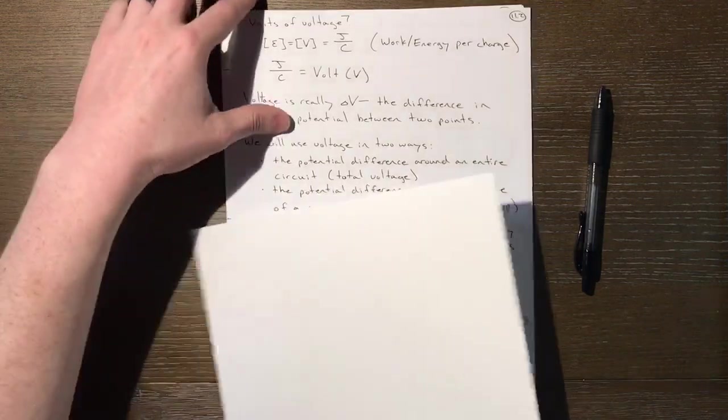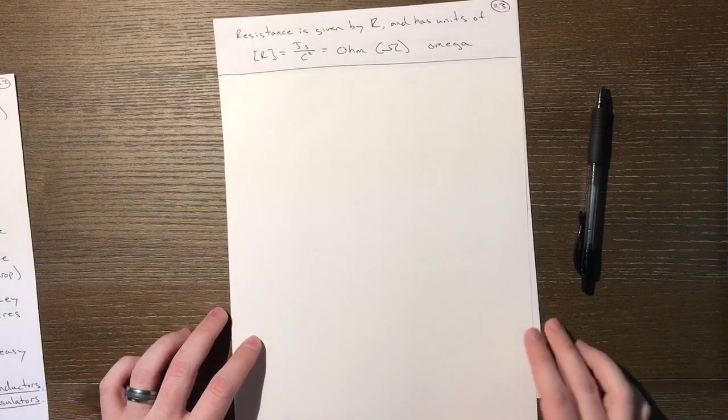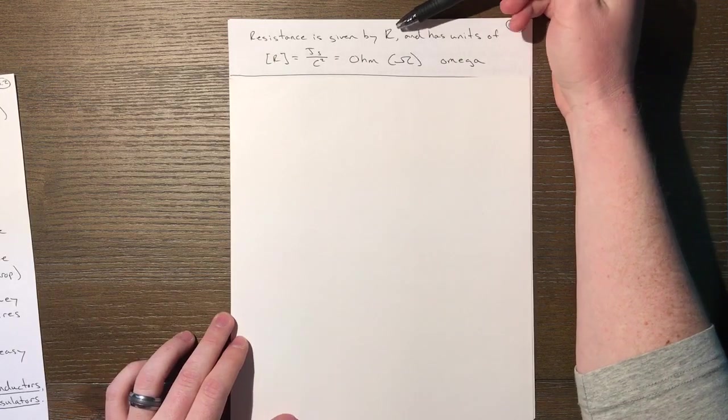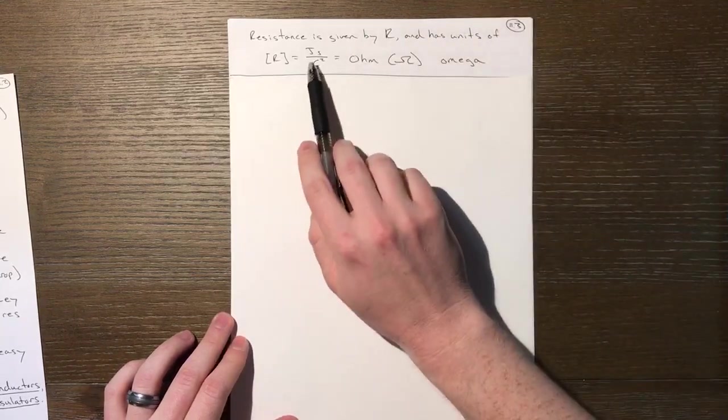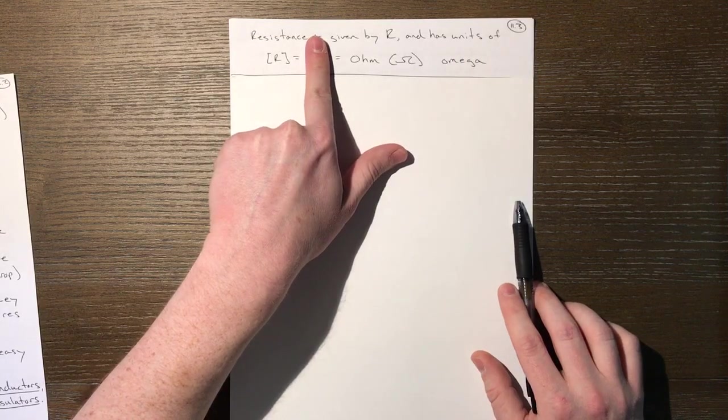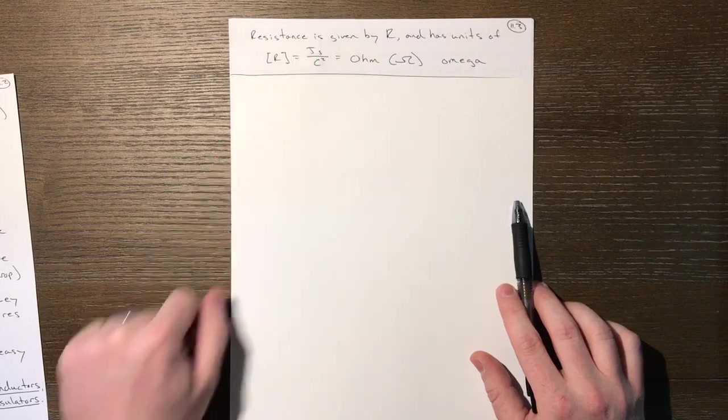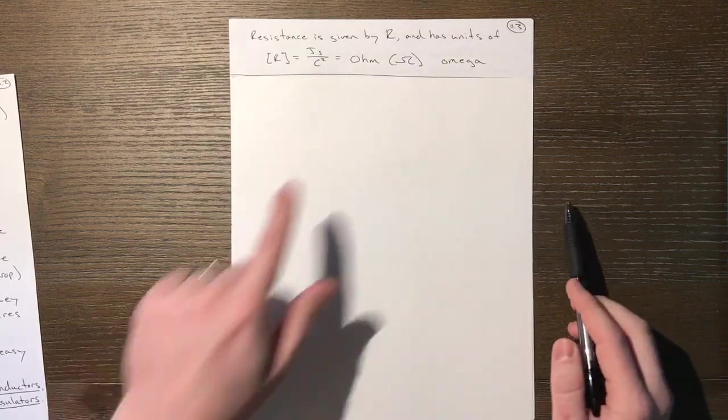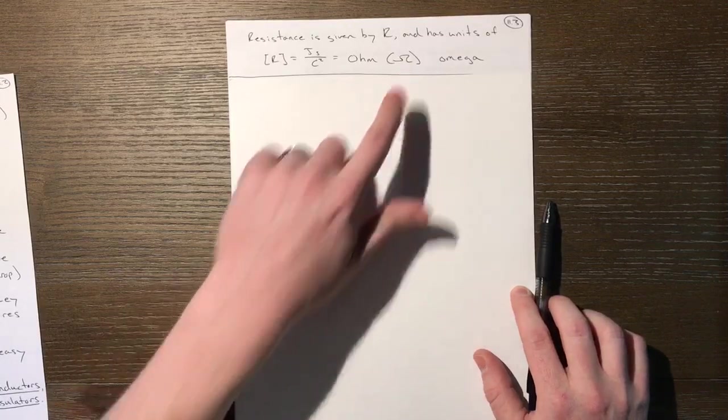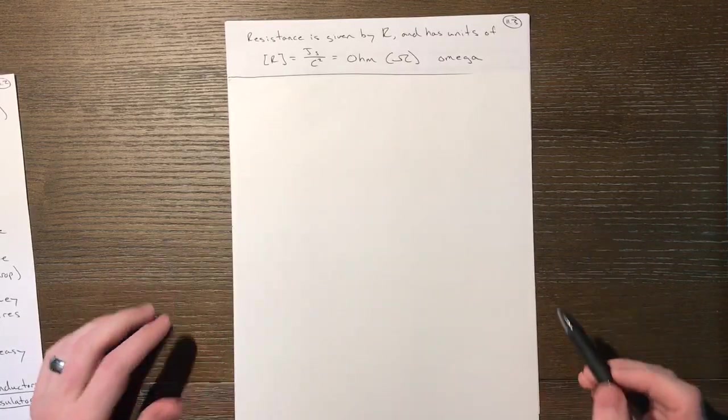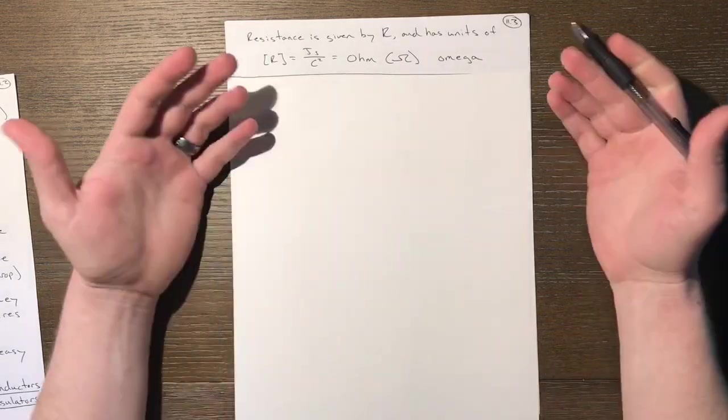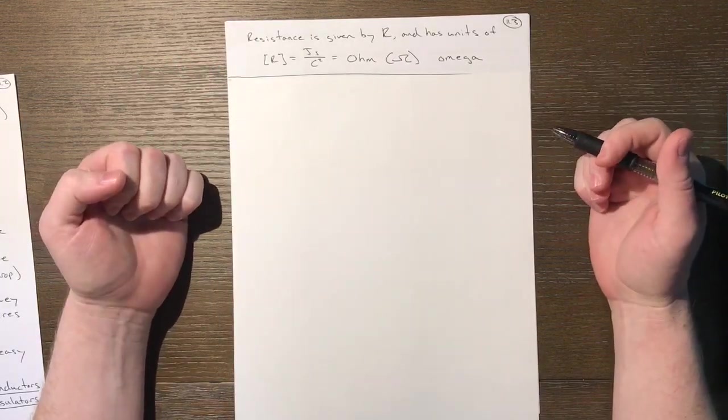One last thought: the units of resistance. Resistance is given by capital R with units of joule second per coulomb squared, but ignore that. The unit you'll use is the ohm, given by the Greek letter omega. It's a fun letter to write, kind of looks like an octopus. That covers the basic definitions of what we'll be using in Chapter 11.